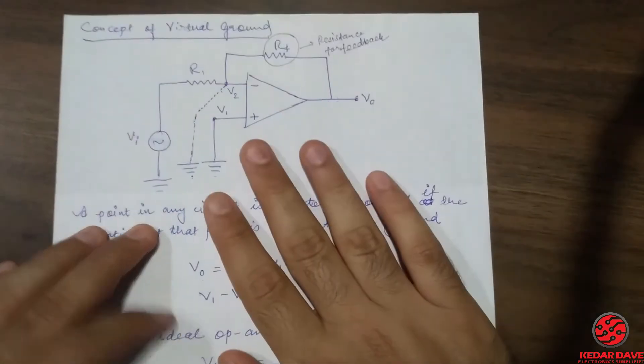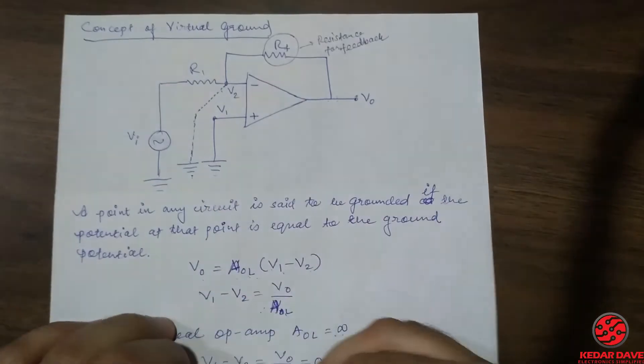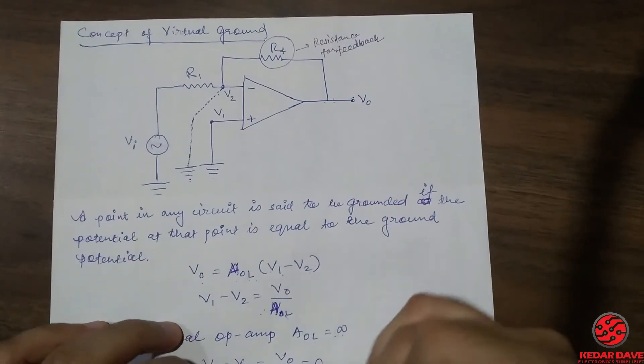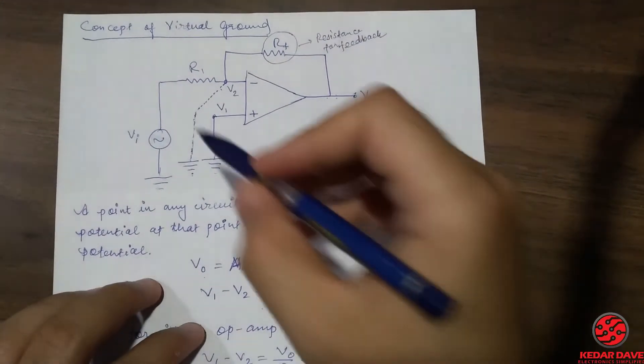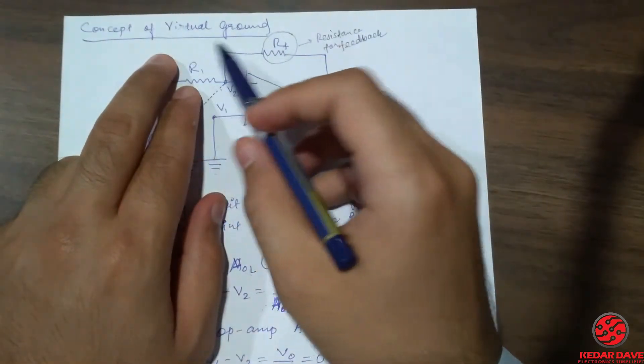Welcome friends, welcome to the lecture series of analog electronics. Today we are going to learn about the concept of virtual ground in the operational amplifier.